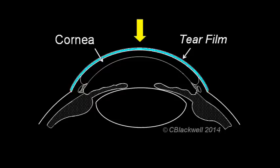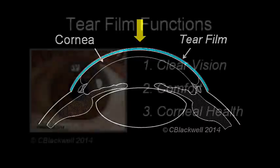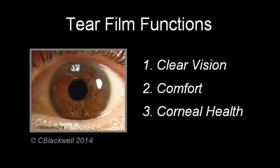The first thing that light encounters as it reaches your eye is the tear film on the surface of the cornea. A good quality tear film is important for clear vision, comfort, and corneal health.